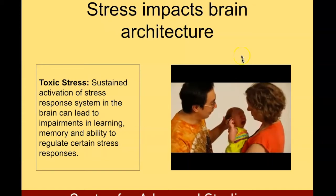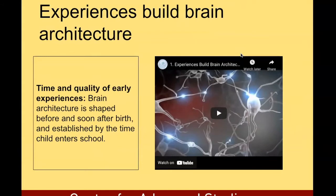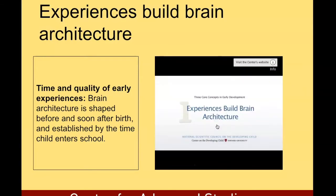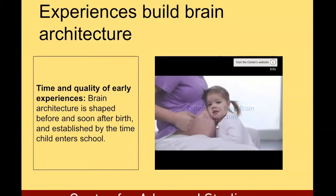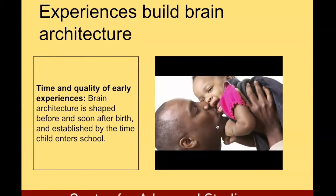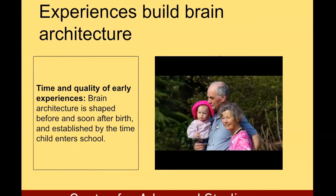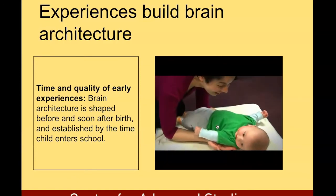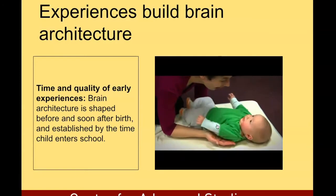Let's now move on to different factors and experiences that build brain architecture. Time and early quality experiences also build brain architecture. Brain architecture is shaped before and soon after birth and is established by the time a child enters school. A child's experiences during the earliest years of life have a lasting impact on the architecture of the developing brain. Genes provide the basic blueprint, but experiences shape the process that determines whether a child's brain will provide a strong or weak foundation for all future learning, behavior, and health.